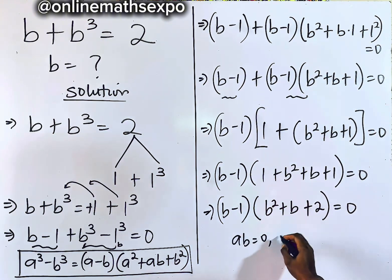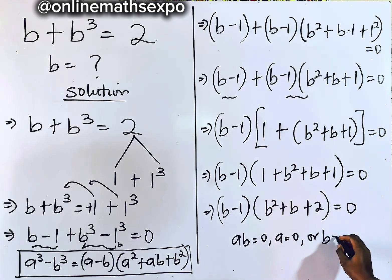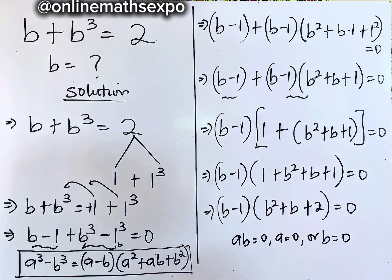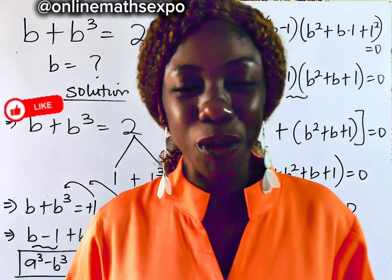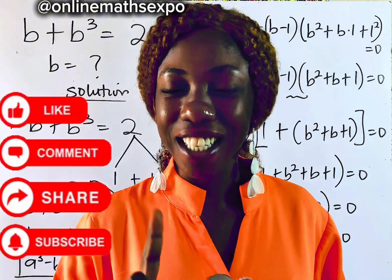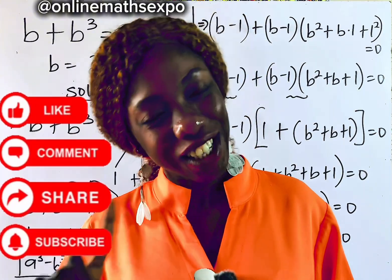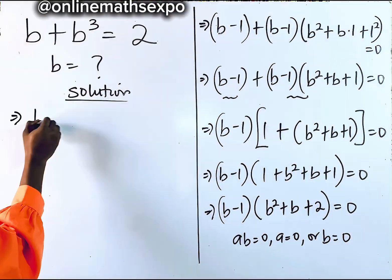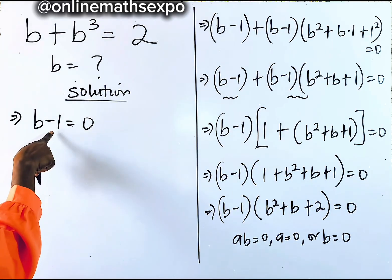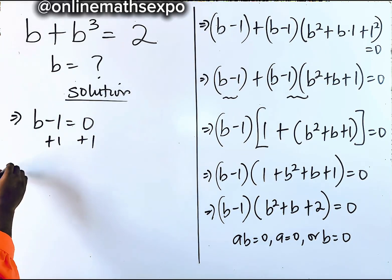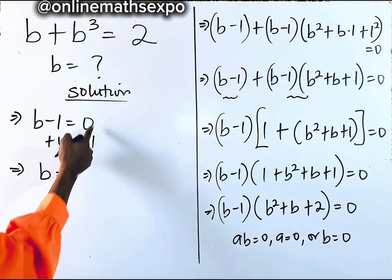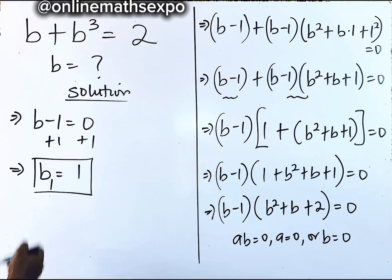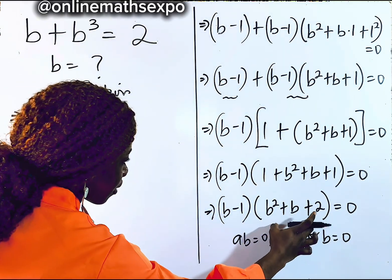For any product ab = 0, either a = 0 or b = 0. Setting the first factor: b − 1 = 0. Adding 1 to both sides gives b = 1. So the first value of b is positive one.